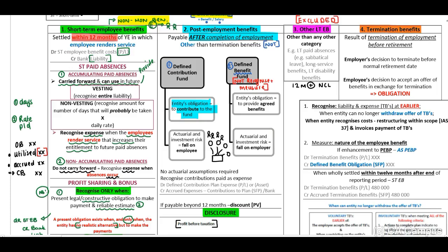Importantly, the investment risk relating to a defined contribution fund falls on the employee. For the journal entry, debit the expense in profit or loss and credit your accrual or bank if being paid out. If the contribution is to be recognized as an asset, you need to debit the asset instead.